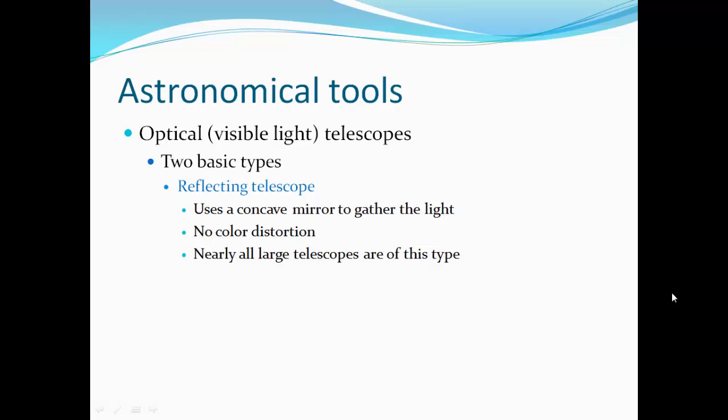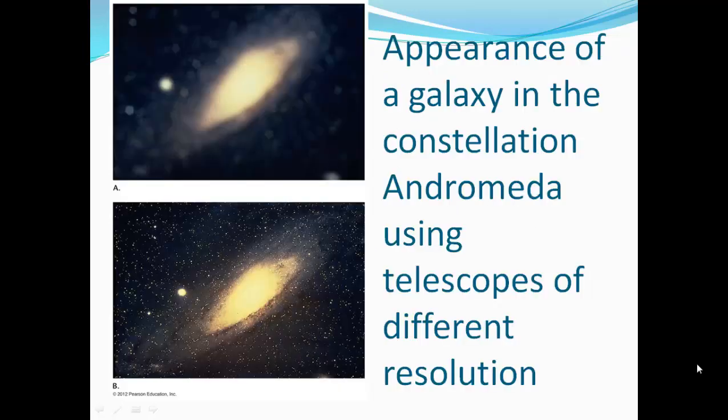Reflecting telescope uses a concave mirror to gather more light. There's no color distortion. Nearly all large telescopes are of this type. Here's the parent galaxy in the constellation Andromeda using telescopes with different resolution. A refracting telescope that's six inches in diameter versus one that's 10 inches in diameter. The smaller one will gather less light, so it's going to look a little more fuzzy or further away. With a larger telescope, we're going to get more information and more detail.